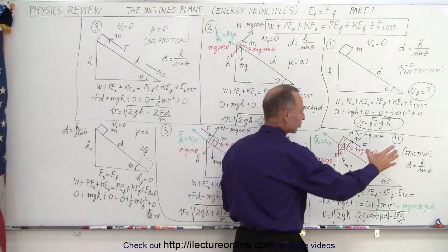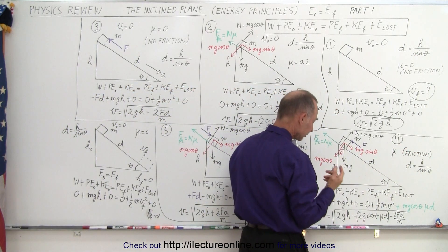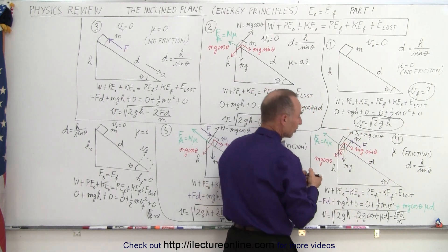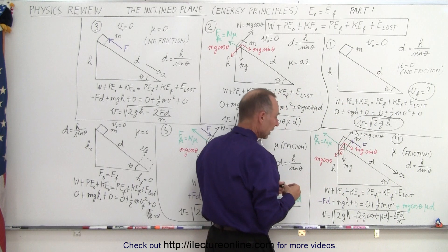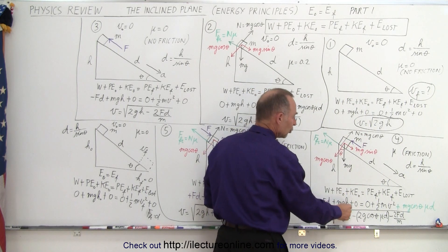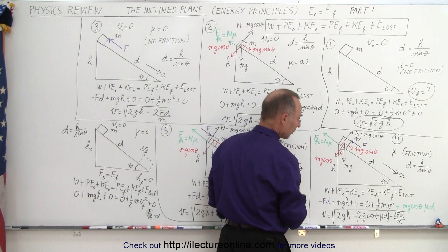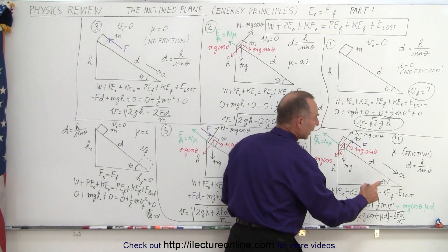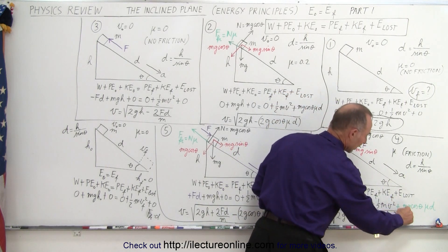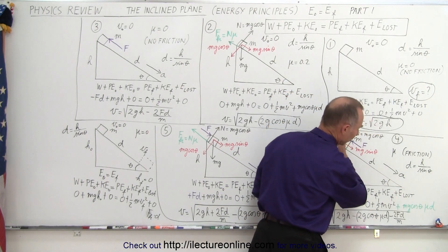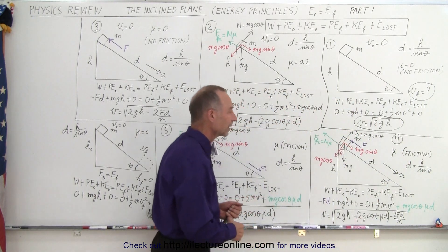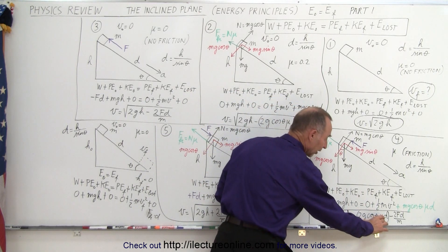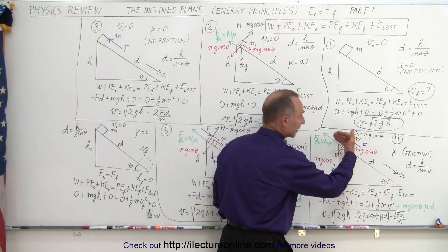In example four, we combine the two: friction and the force pushing in the opposite direction. We still have minus f times d — negative work put into the system because we're pushing opposite to the direction of acceleration. We still have the initial potential energy mgh, no initial kinetic energy starting at zero, no final potential energy at the bottom, kinetic energy one-half mv squared at the bottom, and we lose energy to overcome friction: the friction force mg cosine theta times mu, times the distance traveled d. The final velocity is the square root of 2gh, minus velocity loss due to friction, minus velocity loss due to the opposing force.